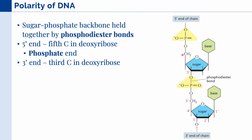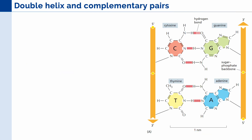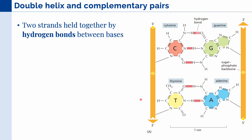This is also known as the phosphate end. Then we have the three prime end, which is the third carbon in the deoxyribose. This is also known as the hydroxyl end. Now, aside from the different phosphodiester bonds that hold our nucleotides together, the two strands in our double helix are held together by hydrogen bonds between the nitrogenous bases, and we can see that in this figure here.